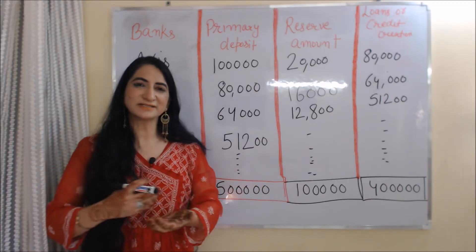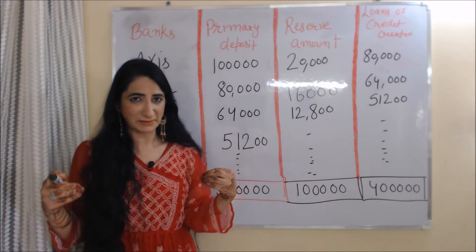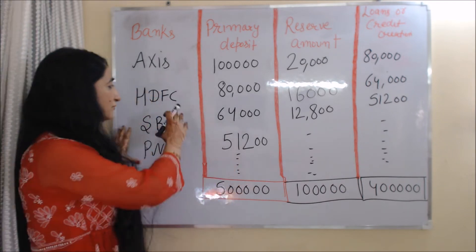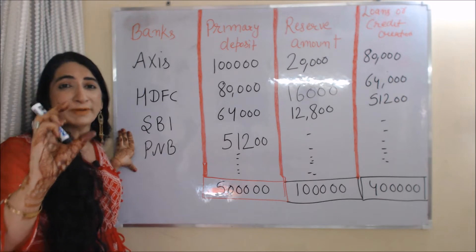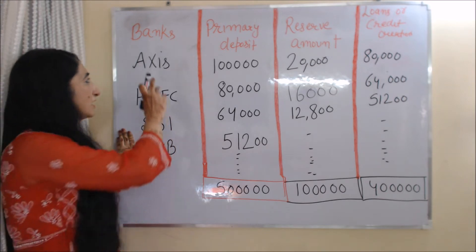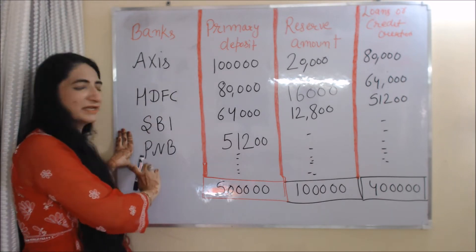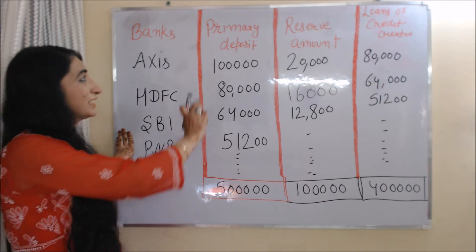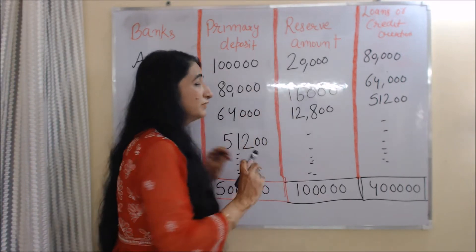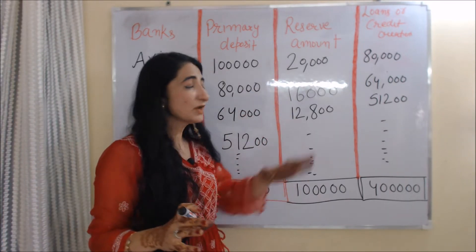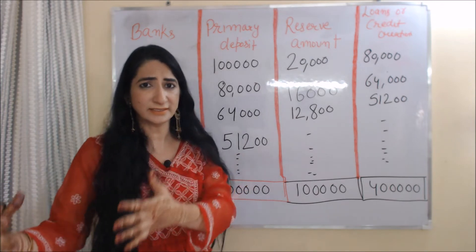Now we will understand the process of credit creation with the help of one example. In the first column we have banks — we take example of four banks: Axis Bank, HDFC Bank, SBI Bank, and PNB Bank. In the second column we have primary deposit, in the third column we have reserve amount, and in the fourth column we have loans.